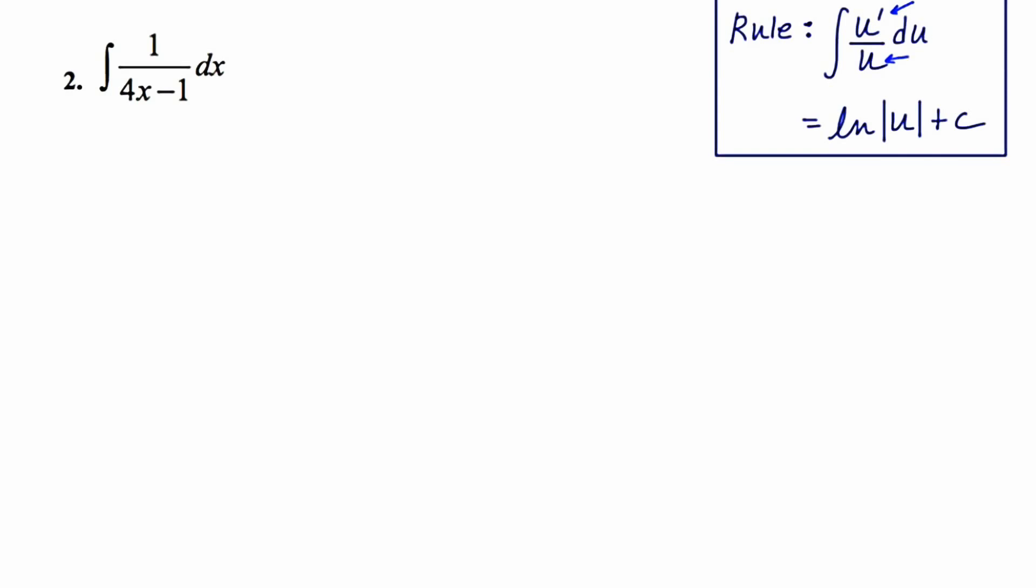So our denominator is 4x minus 1, and the derivative of the denominator is 4. So it's not quite form-fitting to our rule. This is going to require that we use u substitution, and I'm going to allow u to be the denominator.